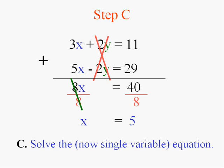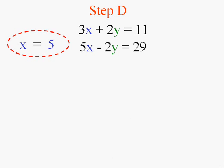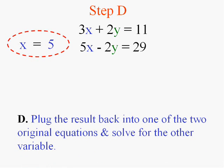Now remember, I'm looking for a point of intersection and a point has an x and a y. So that's not my final answer. I need the y in addition to that. But I have added information. I know x is 5.